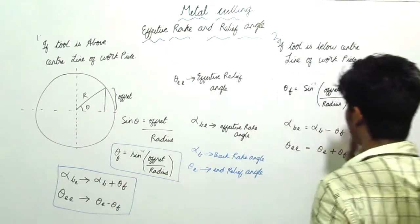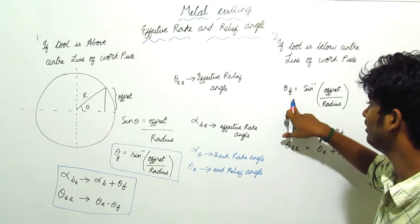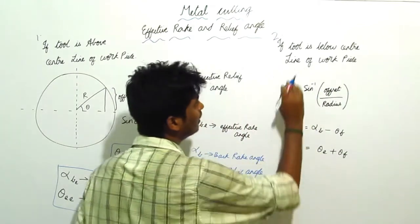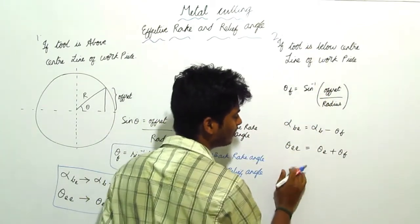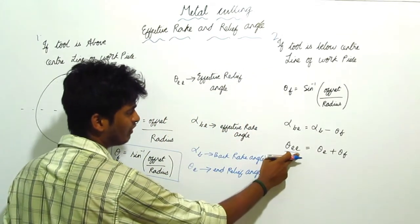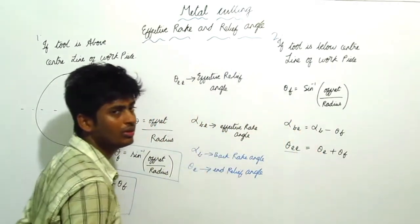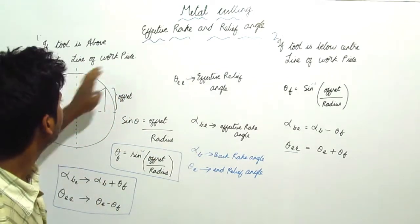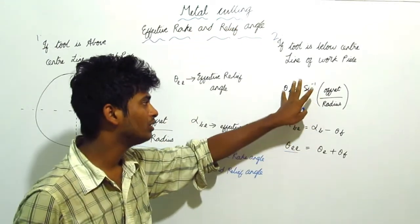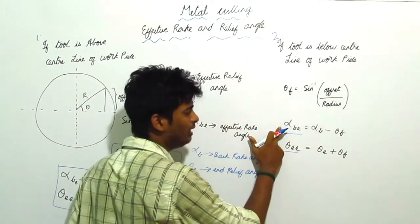This was the first condition. The second condition is when the tool is below the center line of the workpiece. We find θ_f using the same formula. But when the tool is below the center line, the Effective End Relief angle (θ_ee) is found by adding θ_f to the end relief angle. It is vice versa — for the back rake angle (α_b), we subtract θ_f.